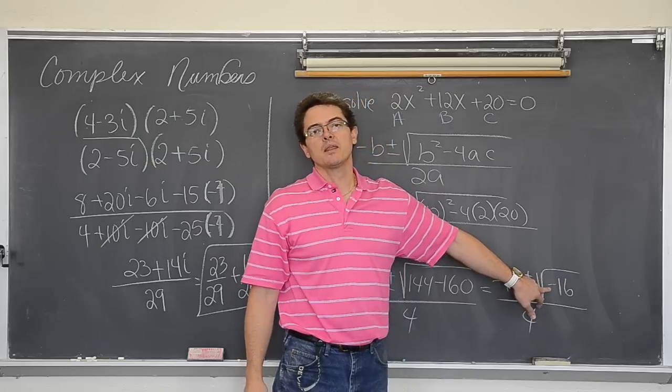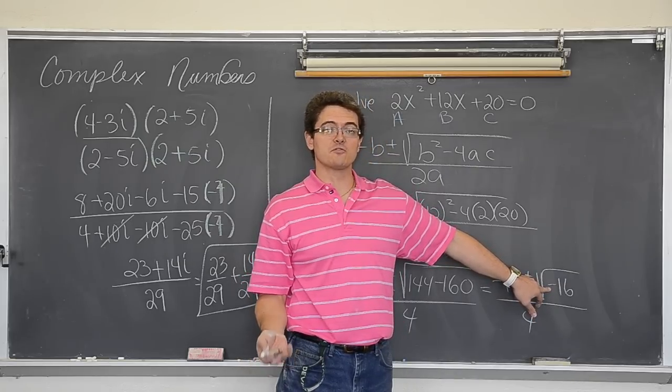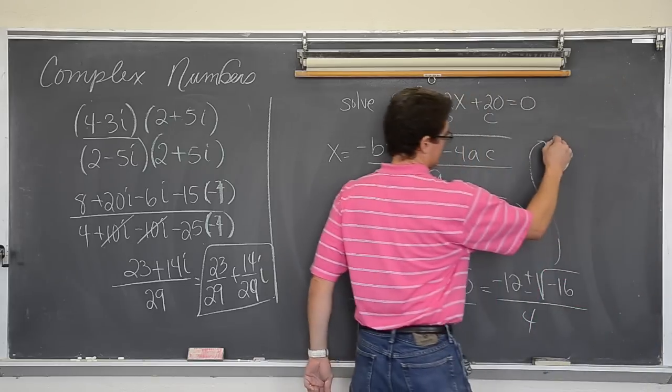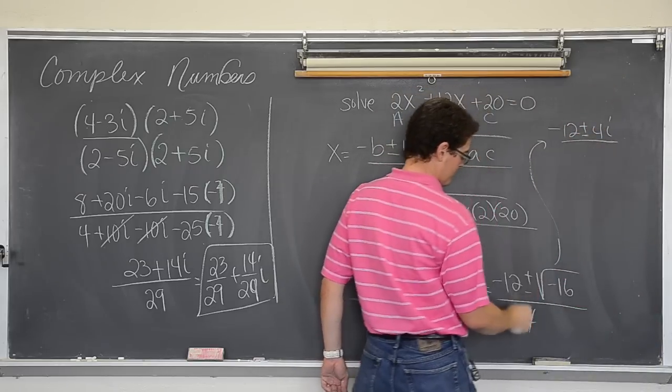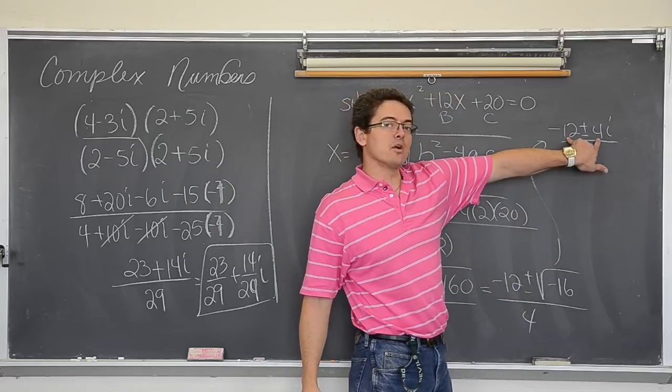And I am running out of space. And look, I am trying to square root a negative 16. Well the square root of 16 I can do is 4. But the negative comes out as imaginary. So we get negative 12 plus or minus 4i over 4. These two terms have a factor of 4 in them.